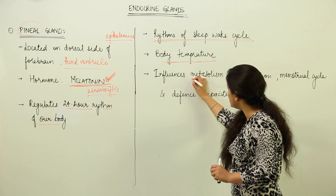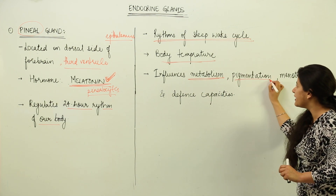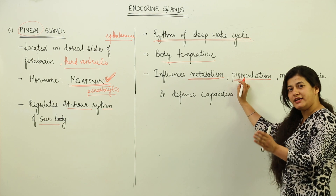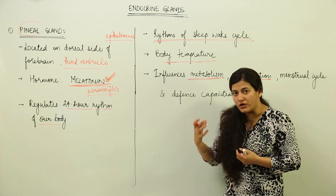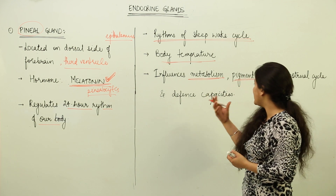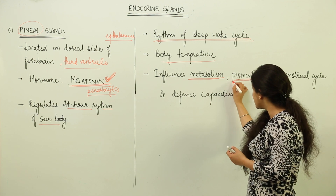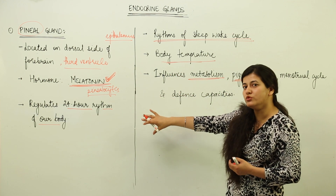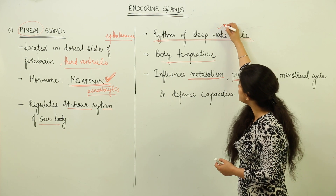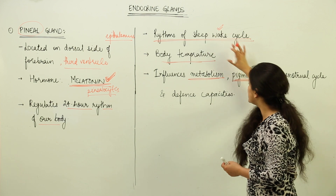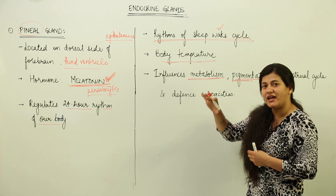Melatonin is also responsible for body temperature regulation and, because of these functions, it can influence the metabolic activities of the body. It can also influence pigmentation along with melanocyte-stimulating hormone. For example, when someone stays awake for a long time, they may develop dark circles around their eyes — this pigmentation is associated with disturbed melatonin secretion due to a disrupted sleep-wake cycle.